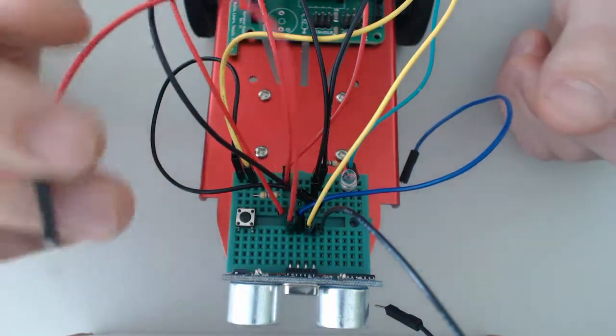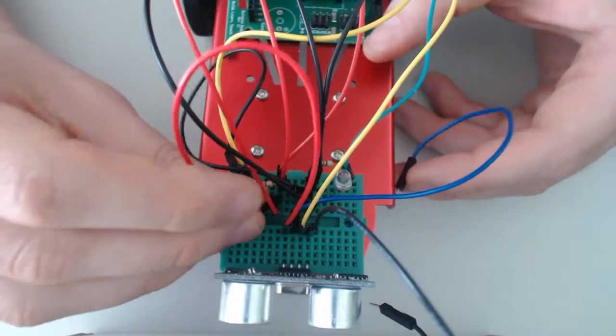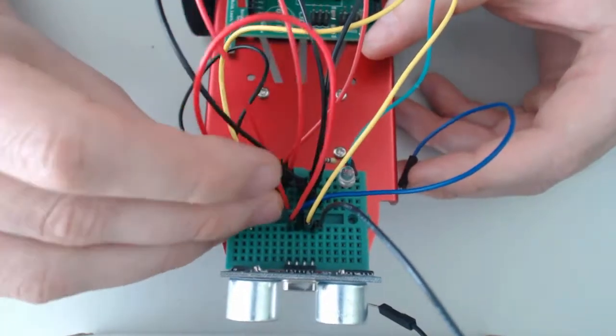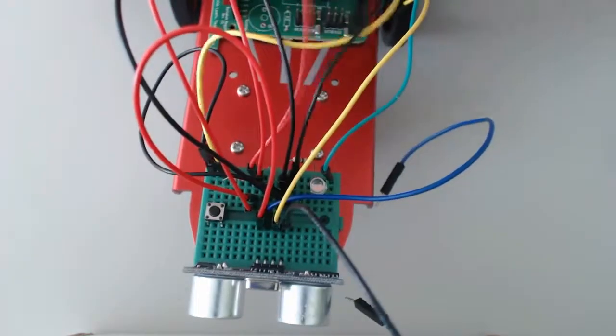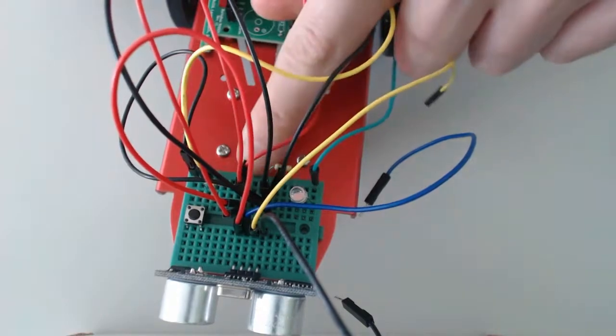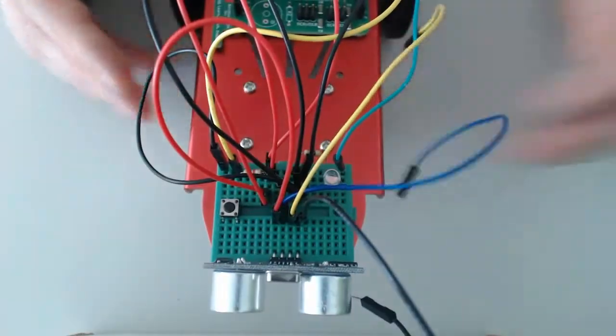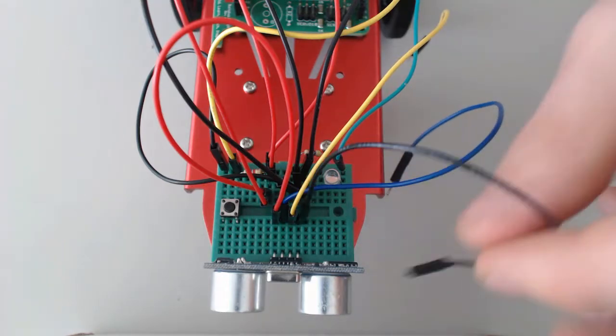Now what I'm going to do with the other end of this wire is stick it into this row here that already has several red wires. Because one of these red wires is going to 5 volts on the Barnabas noggin, that entire row is receiving power.